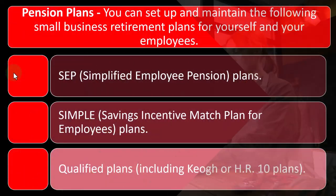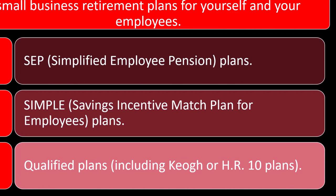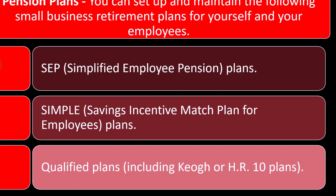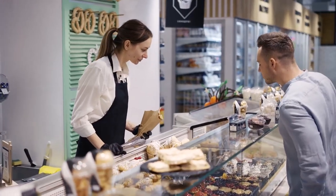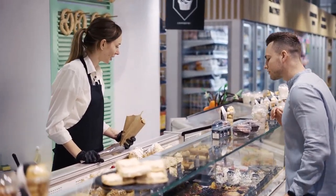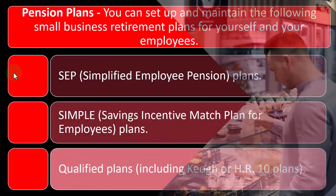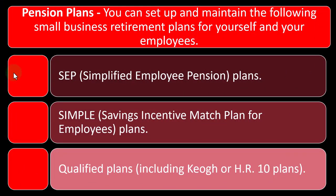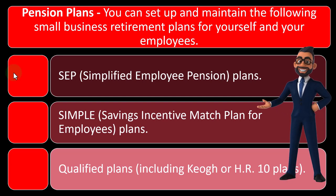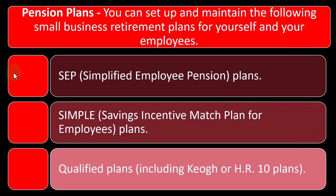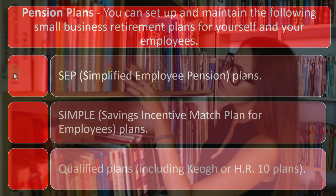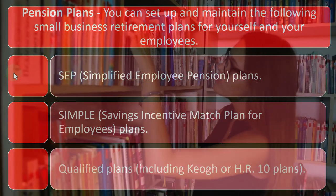If you're a tax preparer dealing with people with a Schedule C, this is something to keep in mind as a topic that will probably come up if the business starts to be profitable. If they have positive cash flow, they might want to put away more than they can in an IRA, and that usually leads to an exploration of the possibility of a SEP or a SIMPLE.